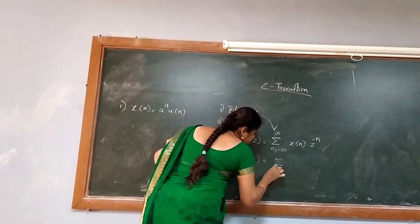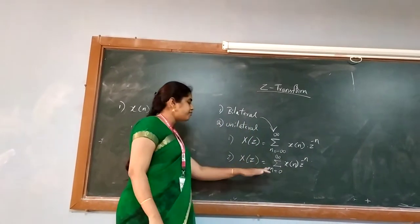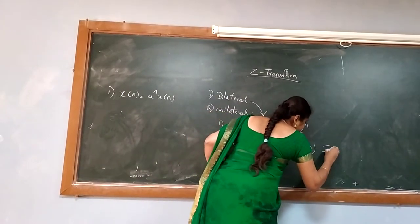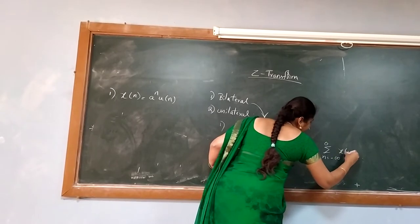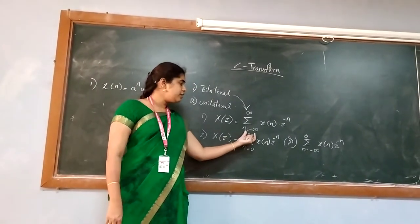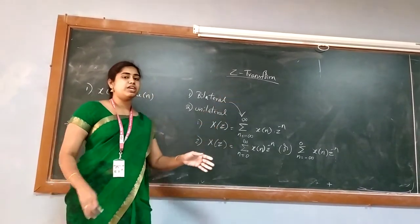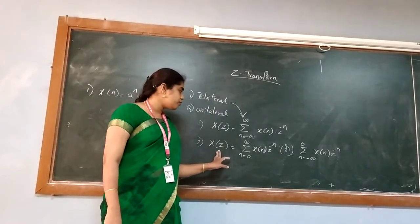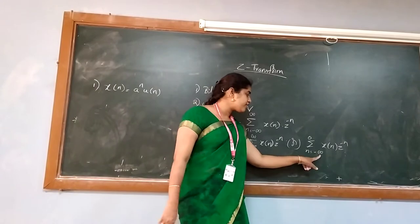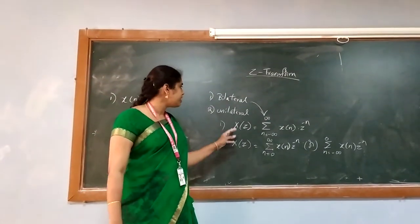For the unilateral Z-Transform, the equation is represented as: sigma, n equals 0 to infinity, x(n), z to the power minus n. You can observe the difference clearly — the limits are starting from 0 to infinity. Alternatively, you can write sigma, n equals minus infinity to 0, x(n), z to the power minus n. In the bilateral Z-Transform the limits go from minus infinity to plus infinity, meaning it includes both sides of the Z-plane. The 0-to-infinity version indicates the right-handed side, and minus-infinity-to-0 indicates the left-handed side.